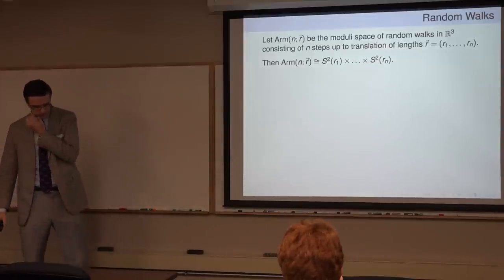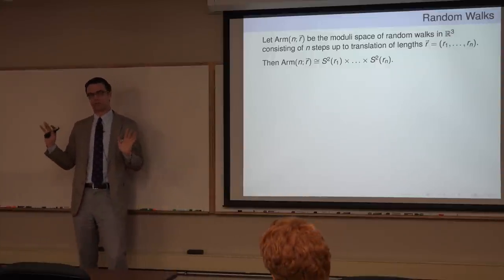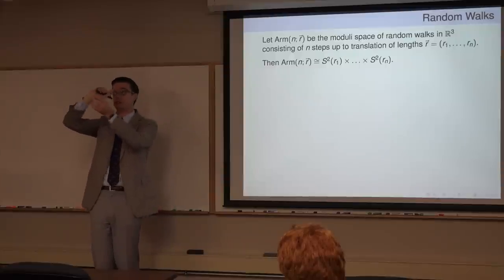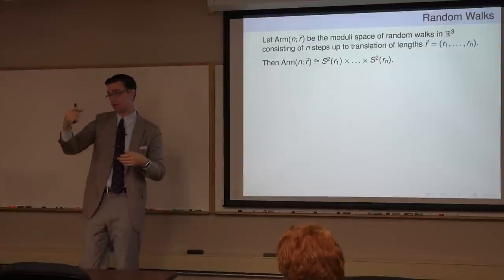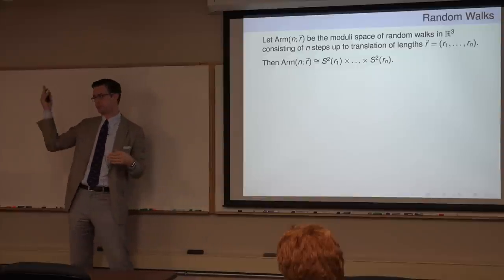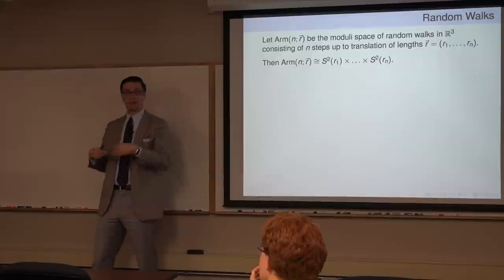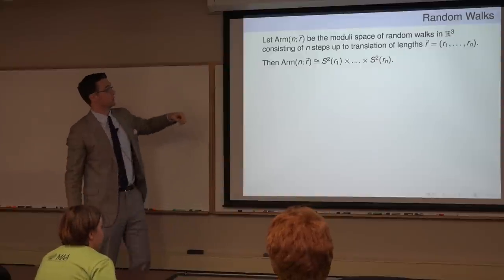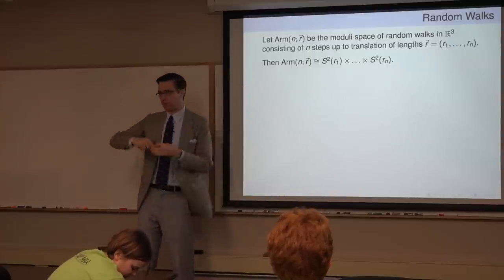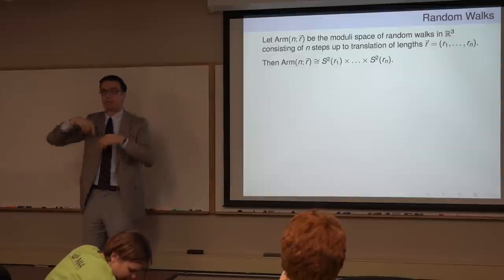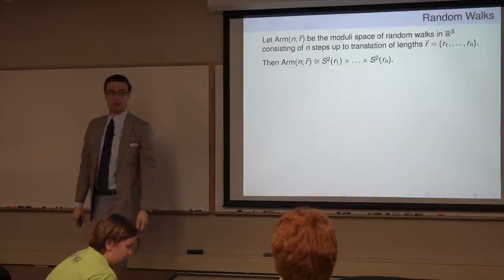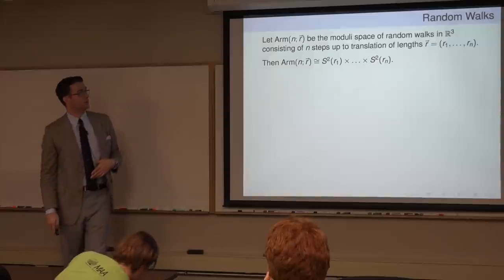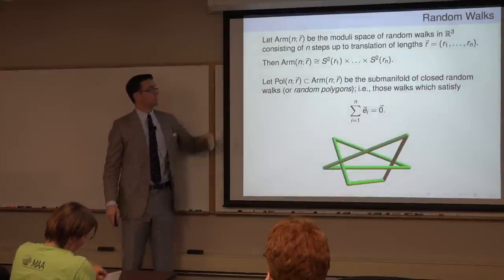Here's the setup. In a classic random walk, you pick a starting point, choose a direction uniformly on the sphere, take a unit step, and iterate. If you mod out by translations by picking the first point at the origin, you treat edges as unit vectors — points on the two-sphere. So you're looking at a product of two-spheres. If you want steps of different lengths R1, R2, etc., you get spheres of different radii. This is what I call the arm space: a product of two-spheres, a perfectly nice space.